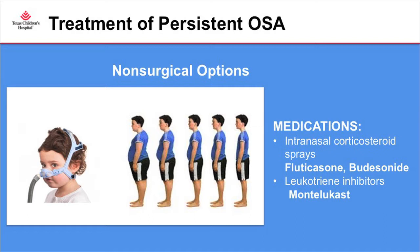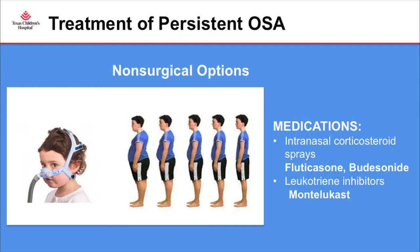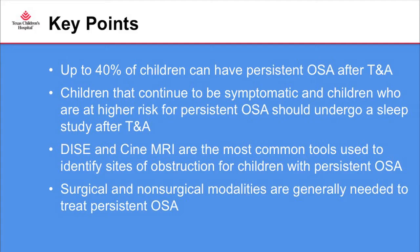There are non-surgical options for persistent OSA. In kids with severe obstruction, it's usually a combination of surgery and non-surgical treatment. CPAP is indicated for many of these kids. Weight management is important for those with increased BMI — we have a nutritionist working in our complex sleep clinic and Trisomy 21 clinic. Intranasal corticosteroid sprays and leukotriene inhibitors such as Singulair have also been noted to help, though Singulair can cause behavioral problems and nightmare sleep disturbance in about 1% of kids.